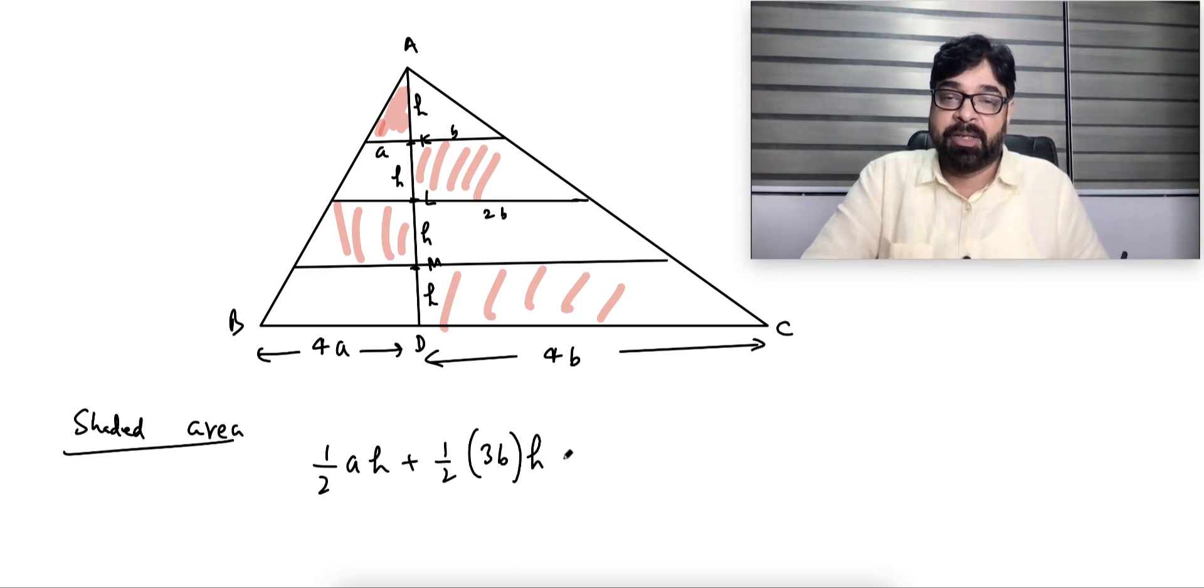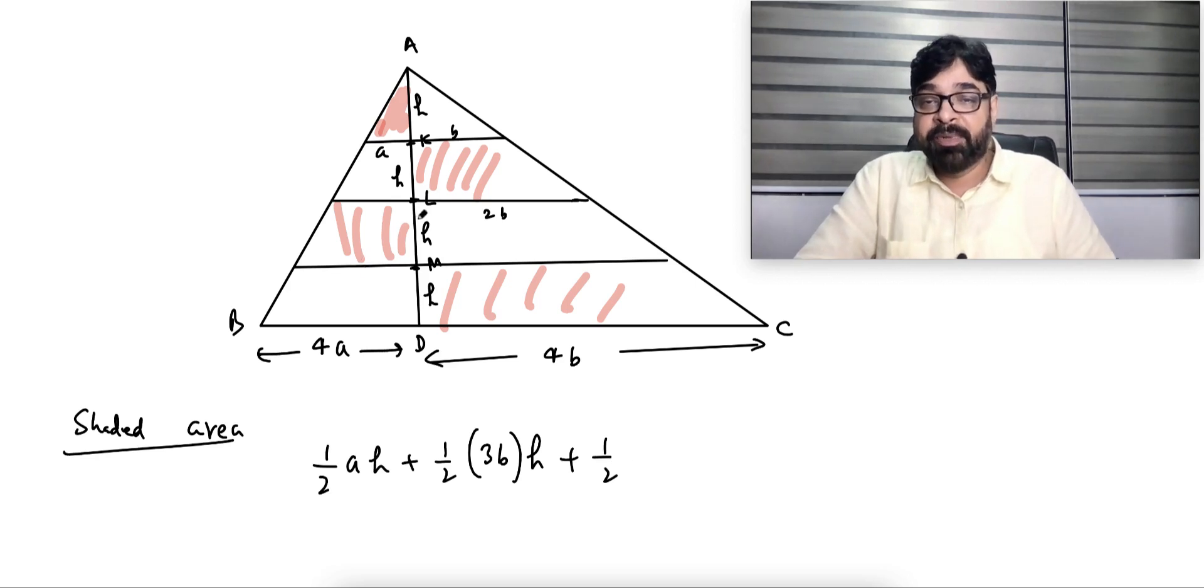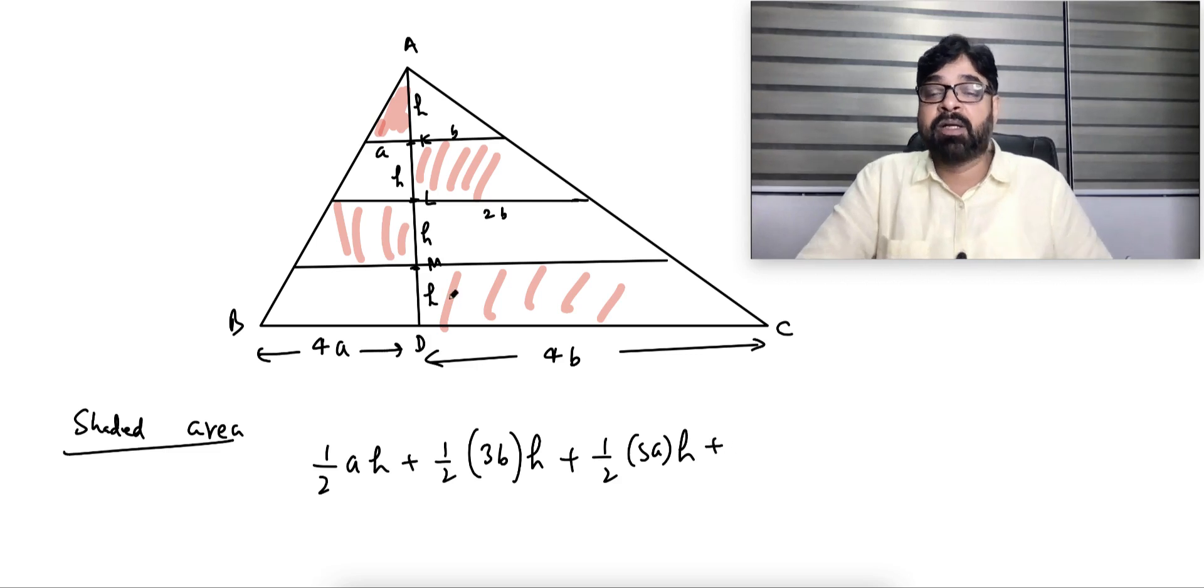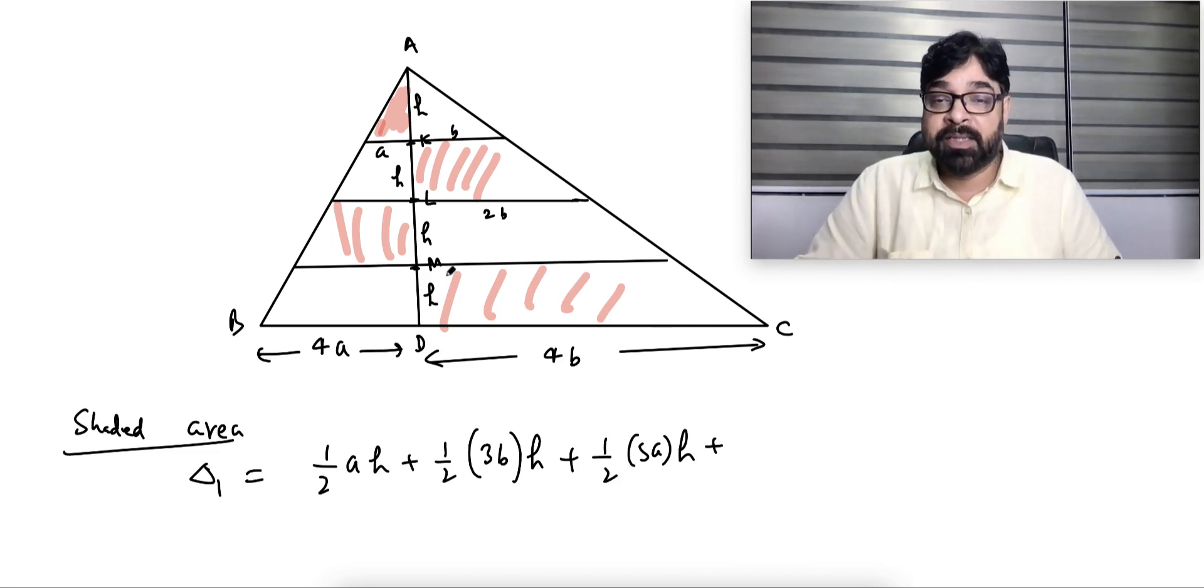Plus now this area. This area will be half, again trapezium. This is h. Think very carefully, this will be equal to 2a, this will be equal to 3a because this is 3h, so this will be 3a. So 3a and 2a, that will become 5a times h. Plus this area, this is 4b. This is 3h so this will be 3b. So 4b plus 3b, half 7b into h. This is the total shaded area.